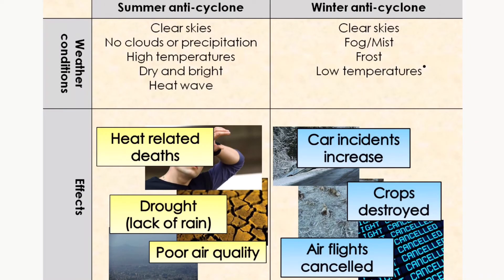Winter anticyclones can also bring a number of effects, such as an increase in car accidents due to slippery roads and ice. Farmers may lose crops due to poor weather and frost, and there is also disruption to air travel due to unsafe conditions for flying.